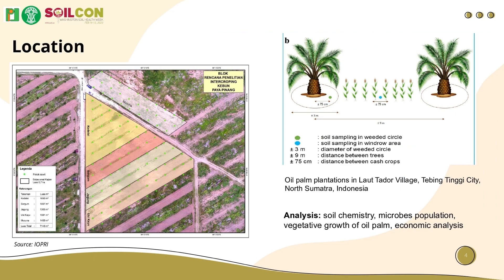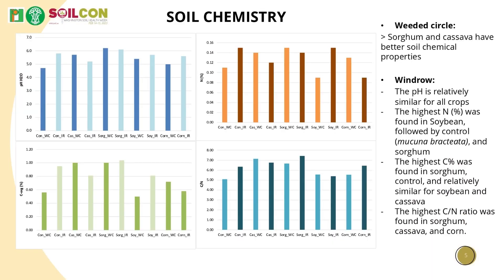The research was conducted in 2021 in Tebing Tinggi, North Sumatera, Indonesia. Soil samples were collected in the weeded circle and windrow areas. After one year of implementation, we found that in the weeded circle, pH, soil organic carbon, soil nitrogen, and C:N ratio were better in the intercropping system, especially for cassava and sorghum.